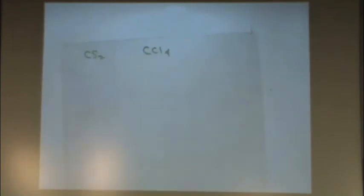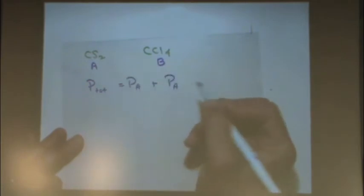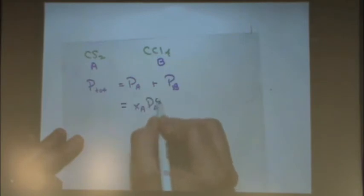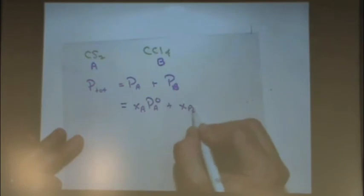We got a solution, it has a vapor pressure of this, the vapor pressure of pure carbon. It's the same sort of thing as what we just did, so let's say we have CS2 and CCL4, so let's just call this one A and that one B. P total equals PA plus PB, and then that's XA PA naught plus XB PB naught.